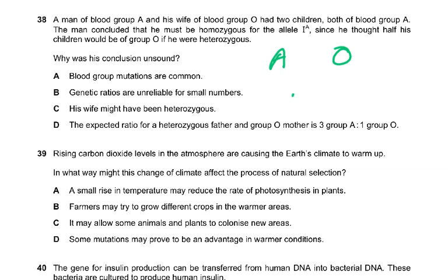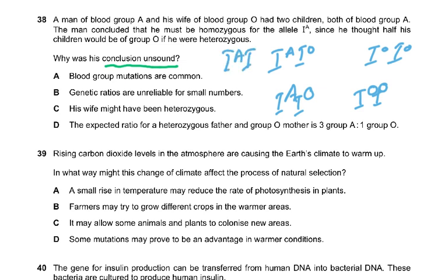The man concluded he must be homozygous, that means he must be I^A I^A. He thought that half the children would be group O if he was heterozygous. If he was heterozygous then we would have this - we would have A's and O's, but that is not necessary. There's just a 50% chance of having a group A and group O child. But if he only has two children it's a very small number of progeny.